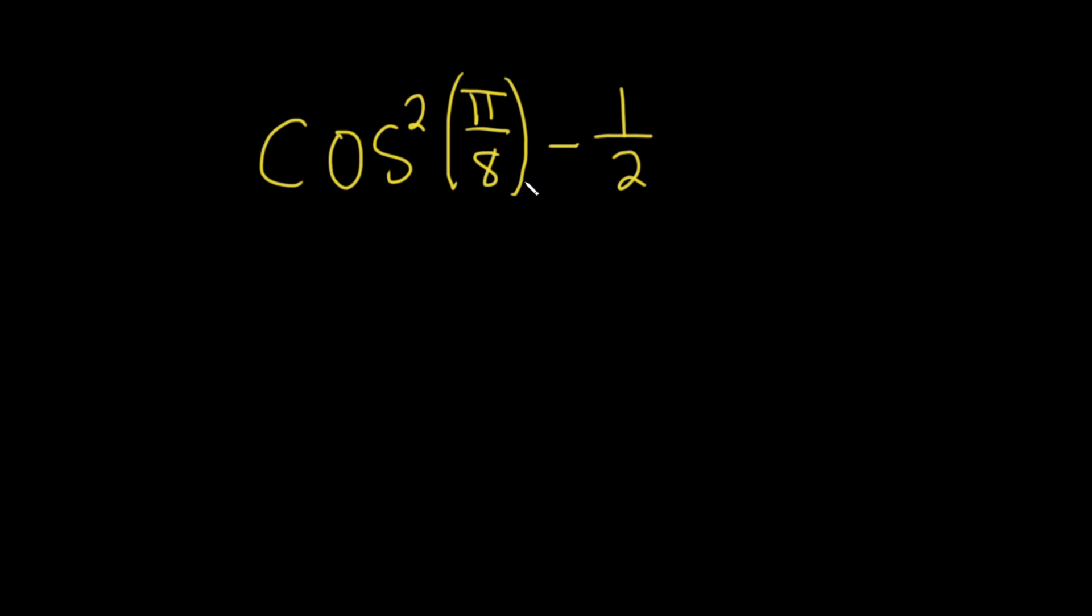So the trick is to recall that there is an identity that looks very similar to this one. It says if you have 2 cosine squared x minus 1, that's the same thing as cosine 2x. So this is the same thing. This is an identity from trigonometry.